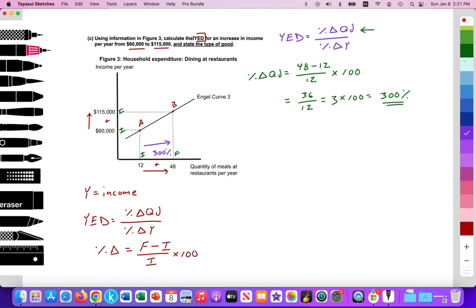Now let's address the change in income. So we're going to now tackle this part of the equation. Percent change in income is going to be final minus initial. So 115,000 minus the initial, 60,000, divided by 60,000.